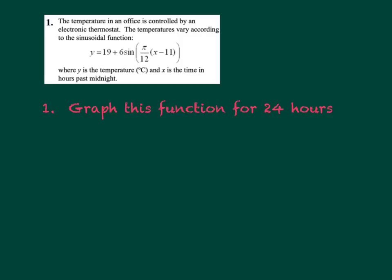Example 1: The temperature in an office is controlled by an electronic thermostat. The temperature varies according to the sinusoidal function — maybe you've heard of this word. It comes from the word sine; it's the shape of the sine graph. They're given this equation where Y represents the temperature in degrees Celsius and X is the time in hours past midnight. We're going to come back to that over and over.